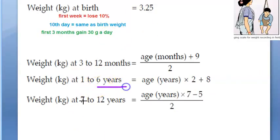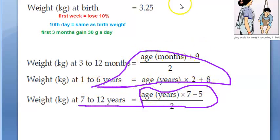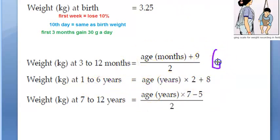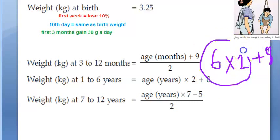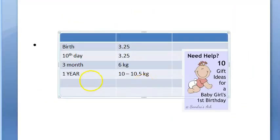Applying the 1–6 year formula at 6 years: (6 × 2) + 8 = 12 + 8 = 20 kgs. So at 6 years, the expected weight is 20 kgs. The weight has doubled from first year birthday (10 kgs) to the 6th year birthday (20 kgs).